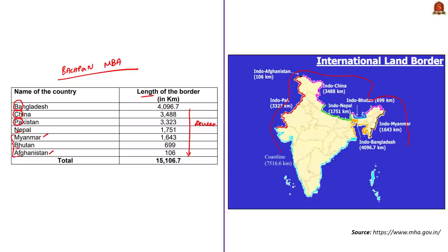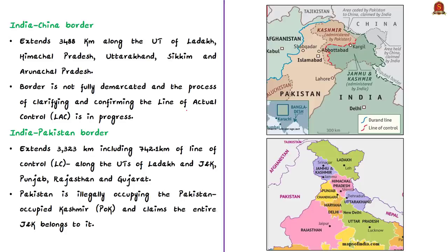India shares 3,488 kilometers of border with China, and this runs along the union territory of Ladakh, Himachal Pradesh, Uttarakhand, Sikkim, and Arunachal Pradesh. This border is not fully demarcated and the process of clarifying and confirming the Line of Actual Control between India and China is still in progress.